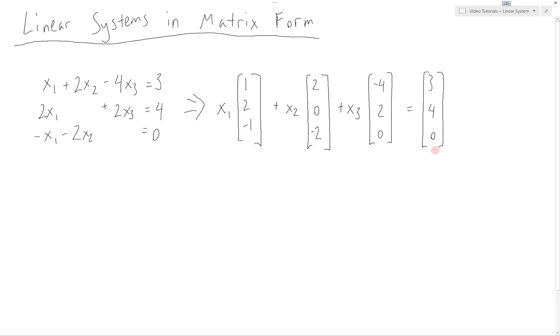What this says is that we have a vector (1, 2, -1), which is the coefficients of the variable x1, plus the vector (2, 0, -2), which are again the coefficients of the variable x2, and so on. And we set that equal to a vector of the constants.